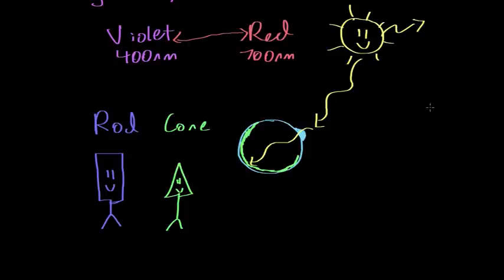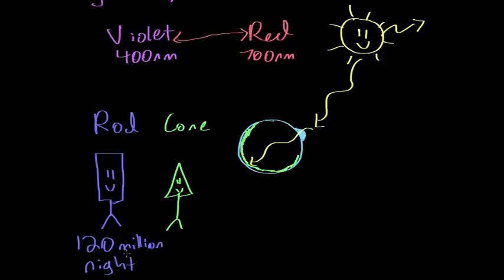Rods and cones differ in several ways. There are about 120 million rods, and they're extremely sensitive to light, making them great for night vision — even a little bit of light allows you to see at night. Rods are also found all around the periphery of the eye, which lets you see on the sides and in low-light conditions.